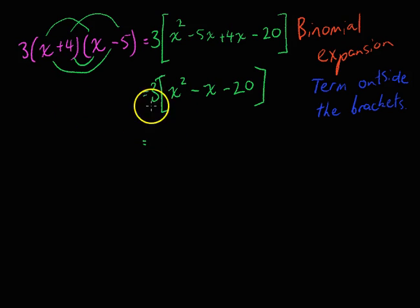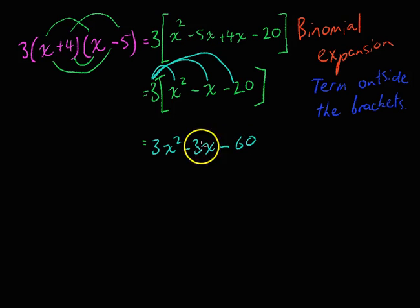Okay, that's pretty straightforward so far. Now the last step here is to multiply every term by the 3. So it's 3 times x squared, that's 3x squared. 3 times negative x, negative 3x. And 3 times negative 20, negative 60.